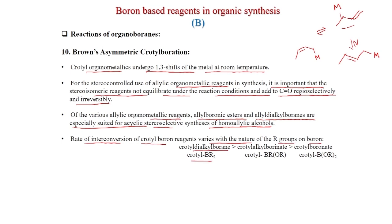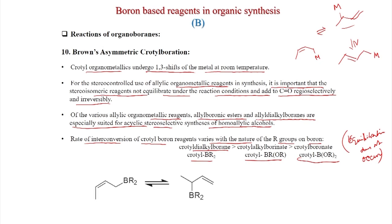The rate of interconversion of crotyl boron reagents varies with the nature of R groups on boron: crotyl dialkyl borane, then crotyl alkyl boronate. When OR groups are on boron, the system is most stable and equilibration does not occur. With boron esters you get high selectivity. Z-crotyl boronate goes to the terminal olefin and can equilibrate to E; if this equilibration is fast, selectivity is lost.